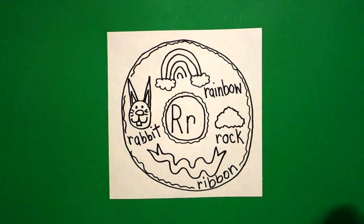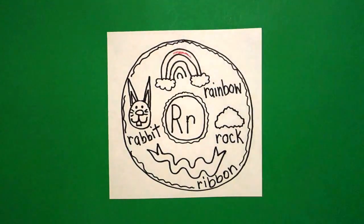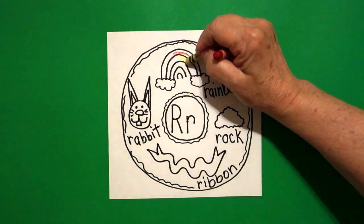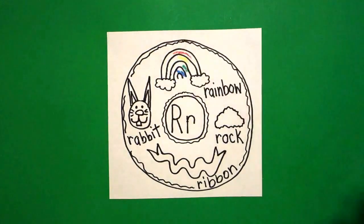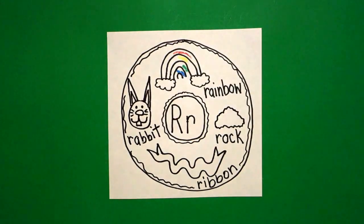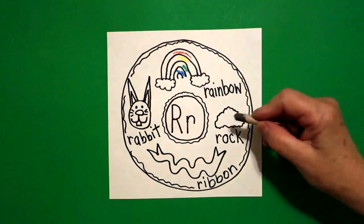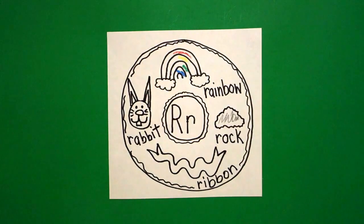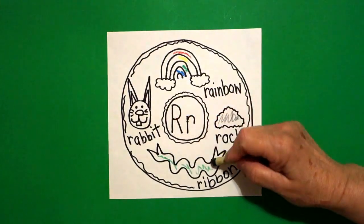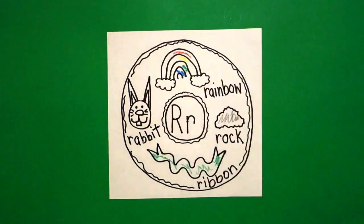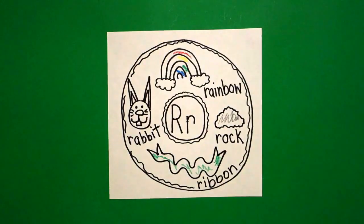Okay, rainbow, rock, ribbon, rabbit, let's see how we're going to color this in. Okay, for my rainbow I'm gonna do red, yellow, green, blue and leave the rest. For my rock I'm gonna do this gray. Now for my ribbon I use green but you can choose any color you want for your ribbon, this is like a ribbon for a box or a ribbon in your hair.